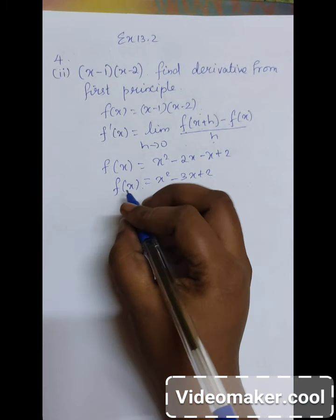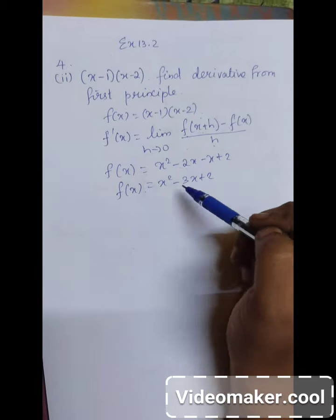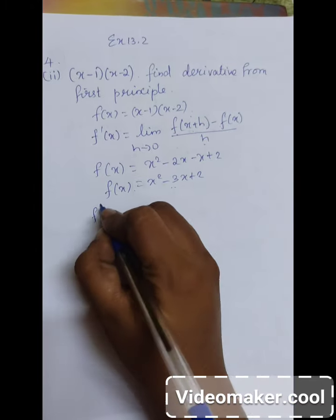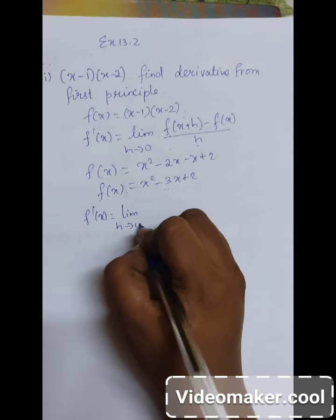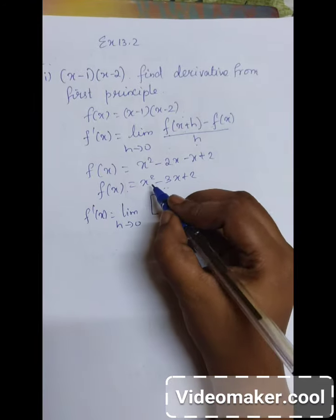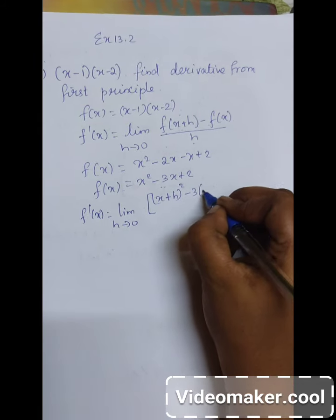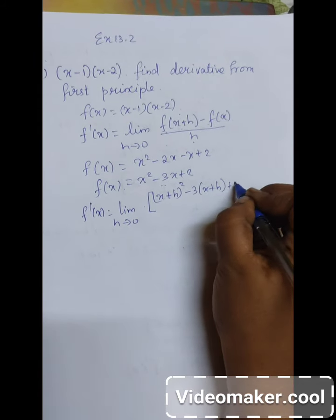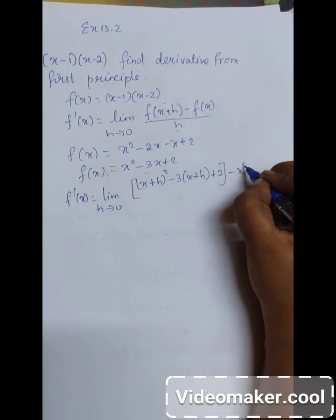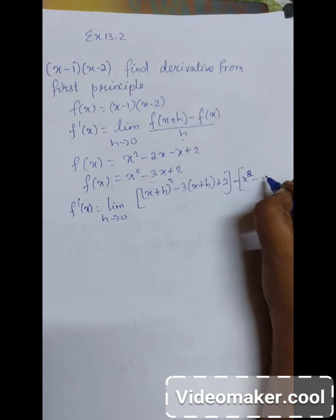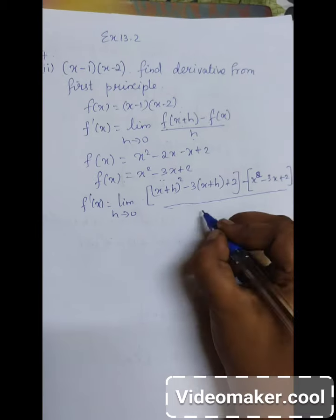Now I am applying the definition of the first principle of derivative over this function. So f dash of x is equal to limit h tends to 0 of f of x plus h, where we substitute x plus h into the function x squared minus 3x plus 2, minus f of x which is x squared minus 3x plus 2, all divided by h.